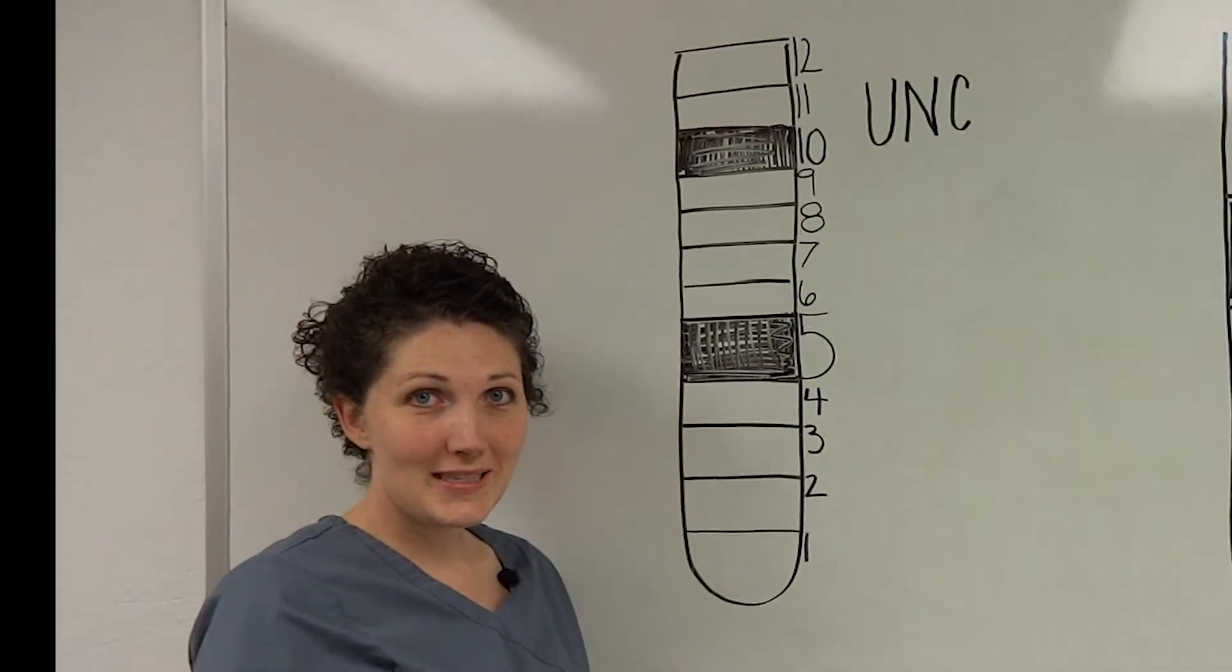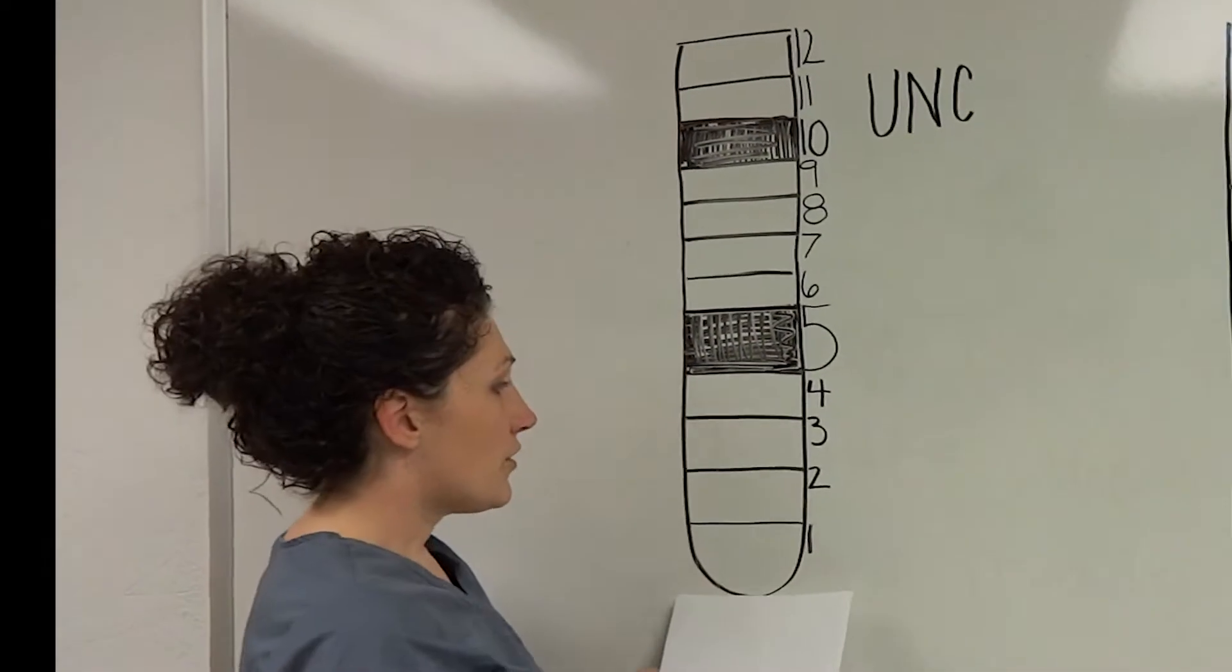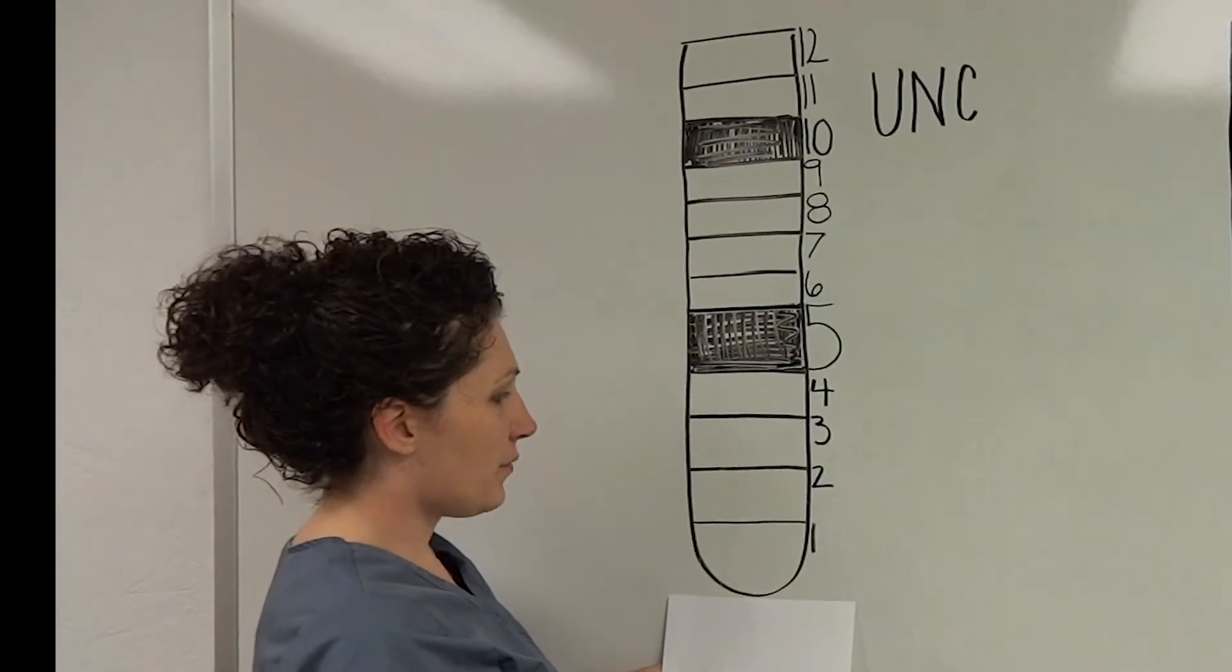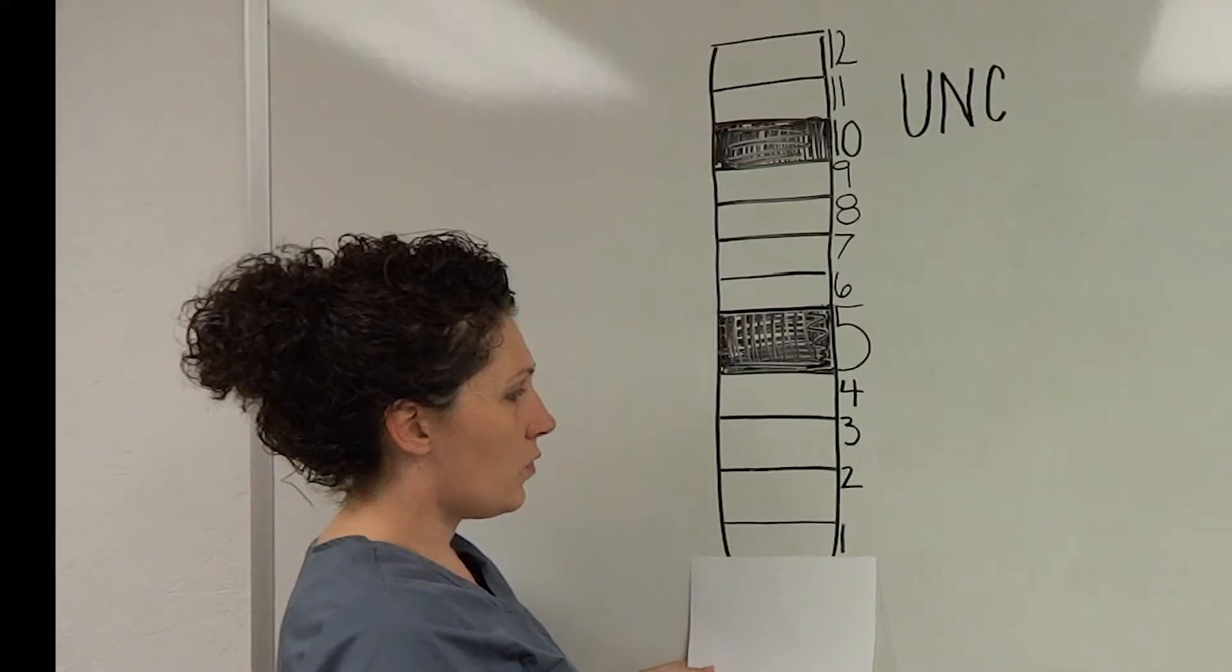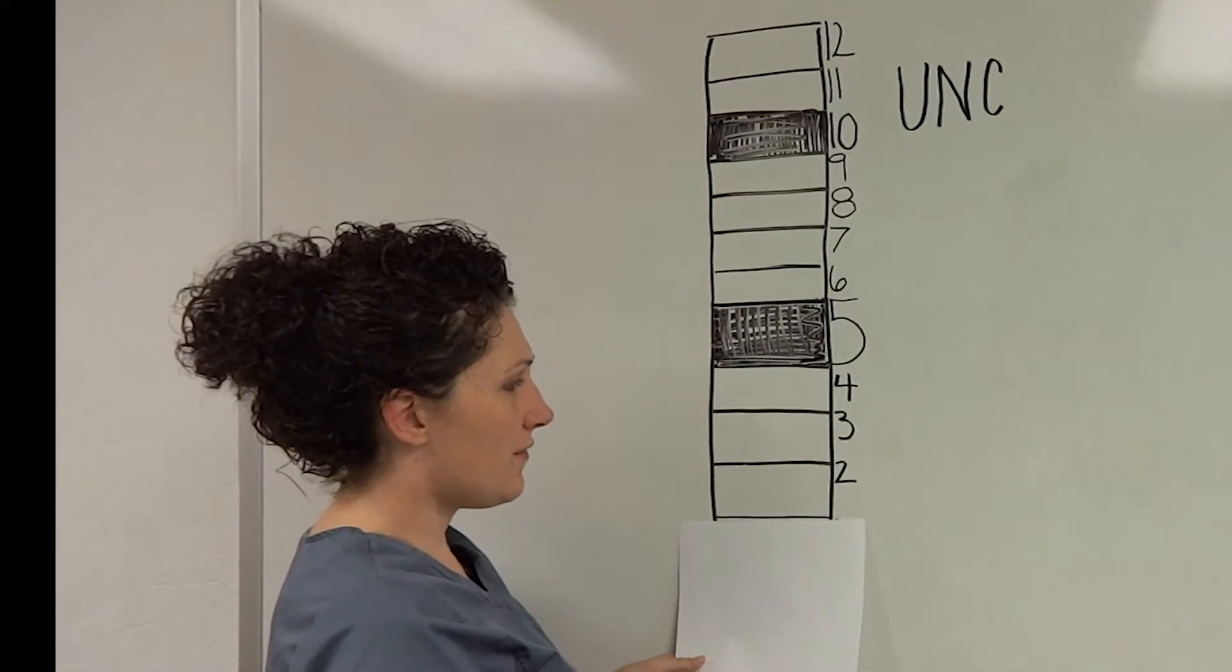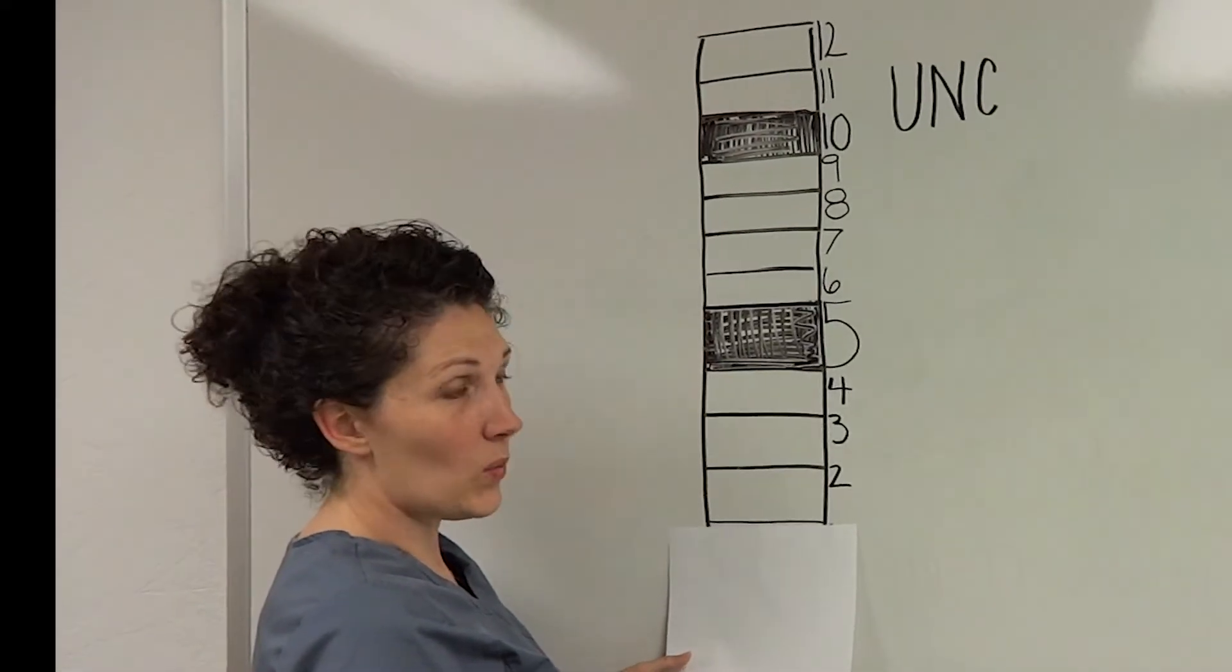I'm going to show you today how to read the UNC probe. For example, if we insert the probe into the gingiva, this whole area here is at a one. Even when you still see that black line, it's a one.